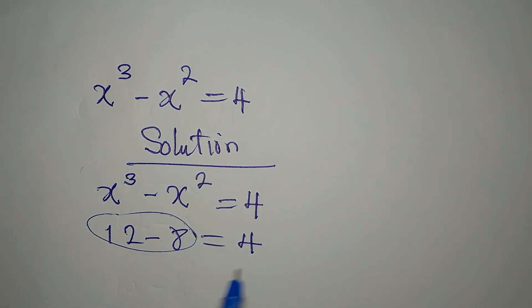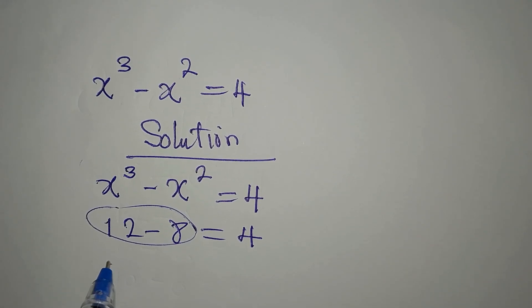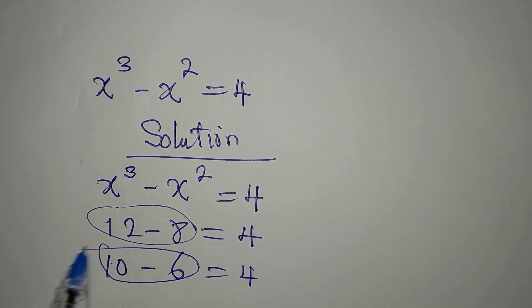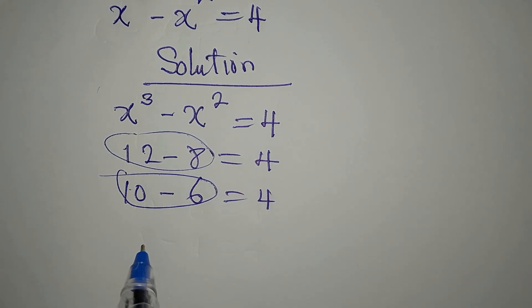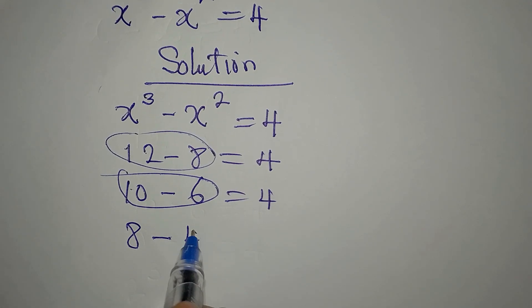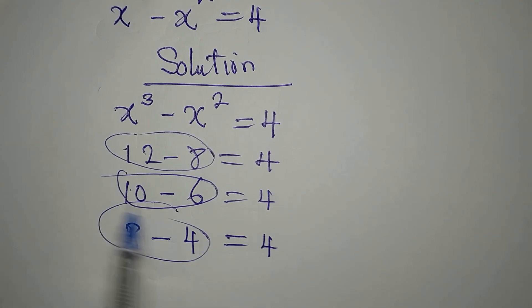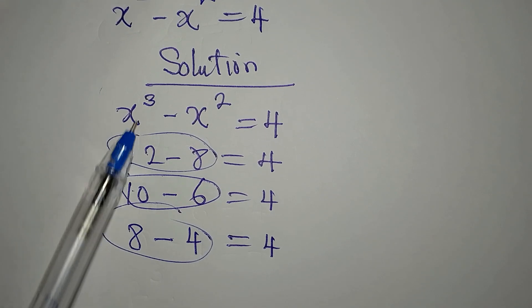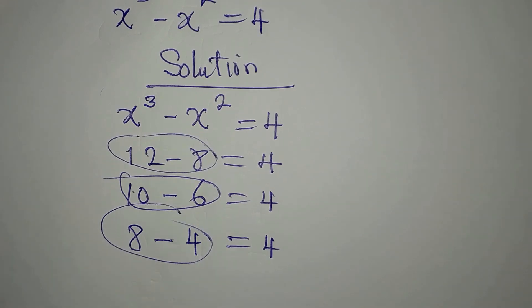4 can also be 10 minus 6, but that cannot be in this form either, so I'm not picking that. What if I have 8 minus 4 equal to 4? Yes — this can be in this form, because 2 to the power of 3 is 8, and 2 to the power of 2 is 4, which fits perfectly.